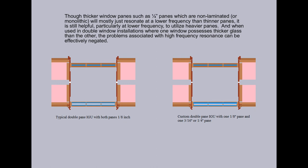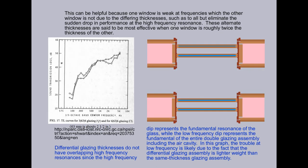And when used in a double window installation where one window possesses thicker glass than the other, the problems associated with high frequency resonance can be effectively negated. This can be helpful because one window is weak at frequencies which the other window is not due to the differing thickness, such as to all but eliminate the sudden drop in performance at the high frequency resonance. These alternate thicknesses are said to be most effective when one window is roughly twice the thickness of the other.